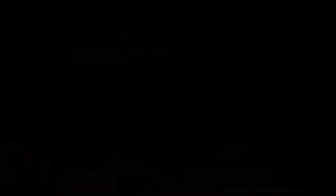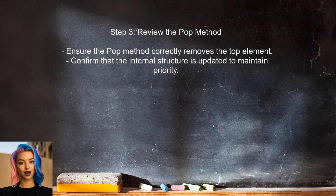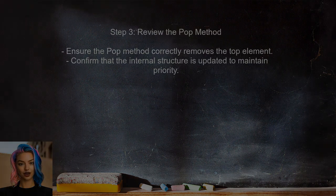The user should also look into the pop method. This method removes the highest priority element from the queue. It's essential that this method updates the internal structure correctly to maintain the priority order.